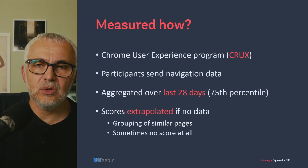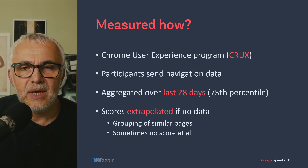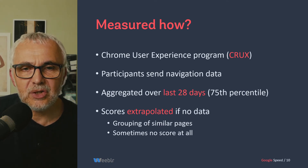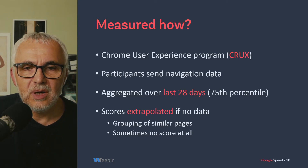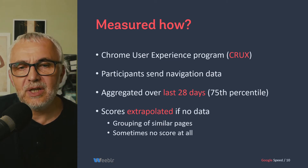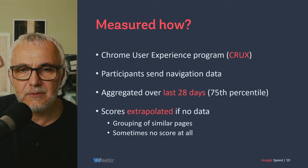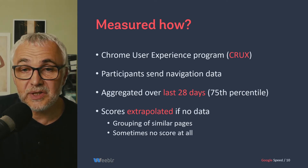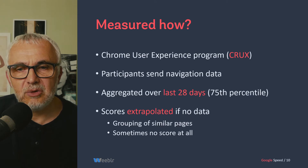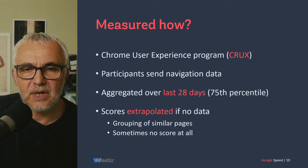So how can Google actually measure that? They are using data from what's called the Chrome User Experience program. This is real-life navigation data coming from people using Chrome who accepted to send anonymized navigation data to Google. They use actual users visiting your site to record how fast your site was displayed when those people visited it. This data is aggregated over 28 days, so it's not moving very fast and needs a bit of time to collect enough data.